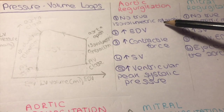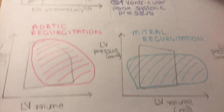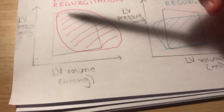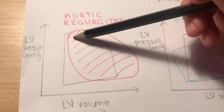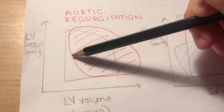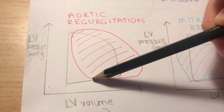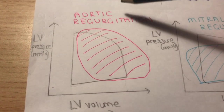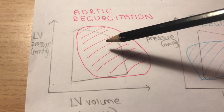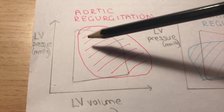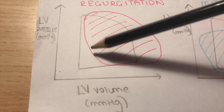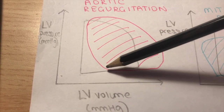The first point: there is no true isovolumetric relaxation. As we said, isovolumetric relaxation is right over here, but in aortic regurgitation there isn't a true isovolumetric relaxation — the volume is actually changing. This is because the aortic valve is not able to close completely, so when it is supposed to be closed, blood is still flowing from the aorta into the left ventricle, causing the left ventricular volume to increase slightly.